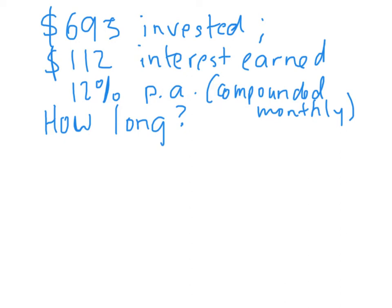We have the problem that $695 has been invested, and then after a certain period of time, $112 of interest has been earned. We're told that the interest rate is 12% per annum, and that interest is compounded monthly. And the question that is asked is, how long will it take to earn that amount of interest?